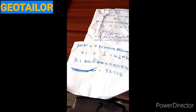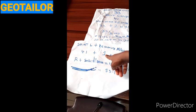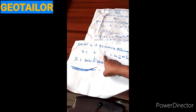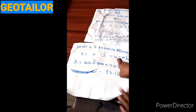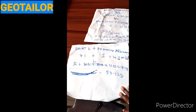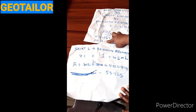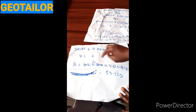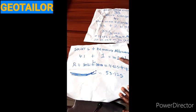Now that I know my R, the next thing is to add my hem allowance to my skirt length. My skirt length is 41 and my hem allowance is one inch, so 41 plus 1 is 42. I'll call this 42 my L. The next step is to add R to L.